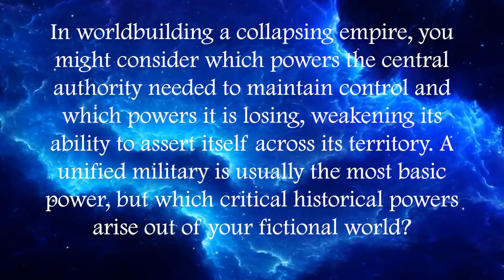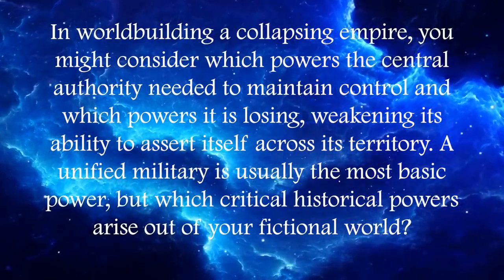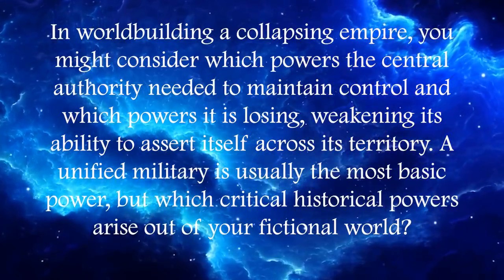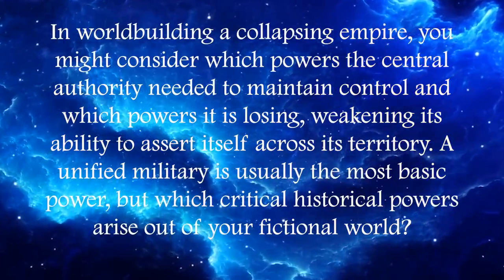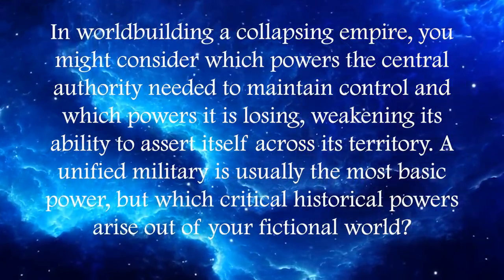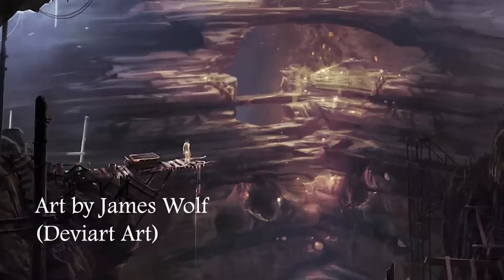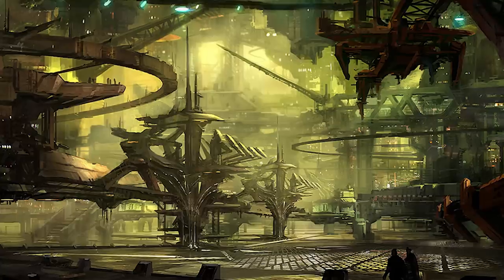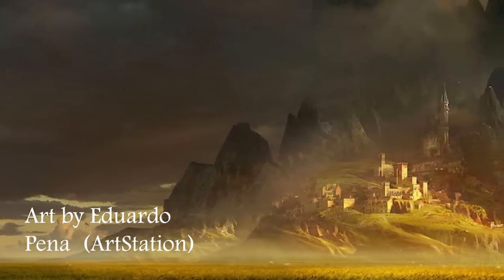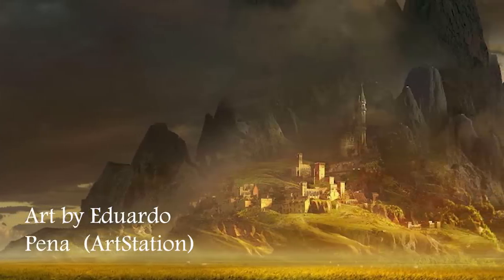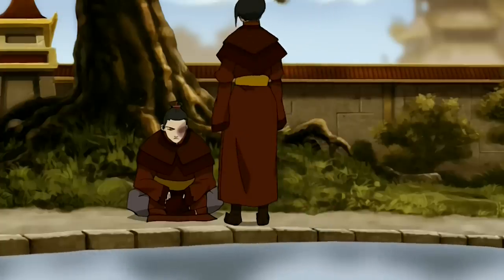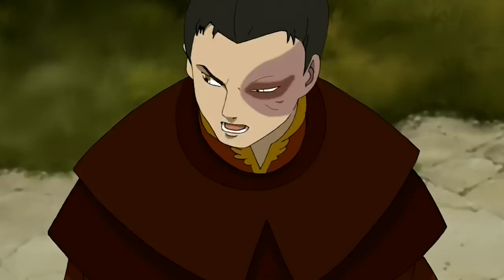When worldbuilding your collapsing empire, consider which powers the central authority needed to maintain control and which powers it is losing, weakening its ability to assert itself across its territory. A unified military is usually the most basic power, but which critical powers arise from your fictional world? What happens if it gives up the power to tax a vital resource, produce a certain advanced sci-fi technology, or hands over the power to run a wizarding education system to its regions — resulting in a group of mages loyal to the states rather than to that central authority?